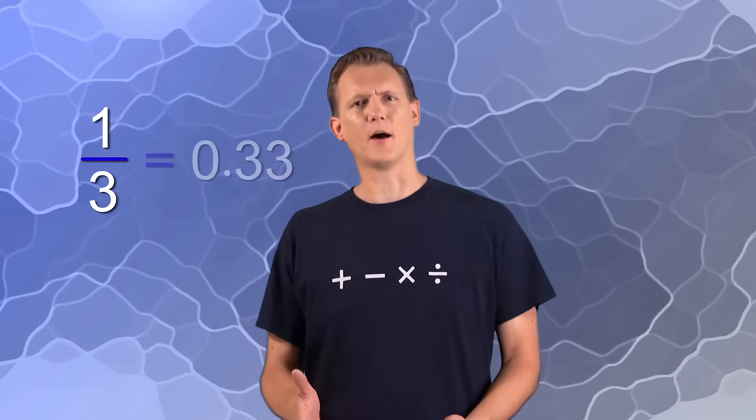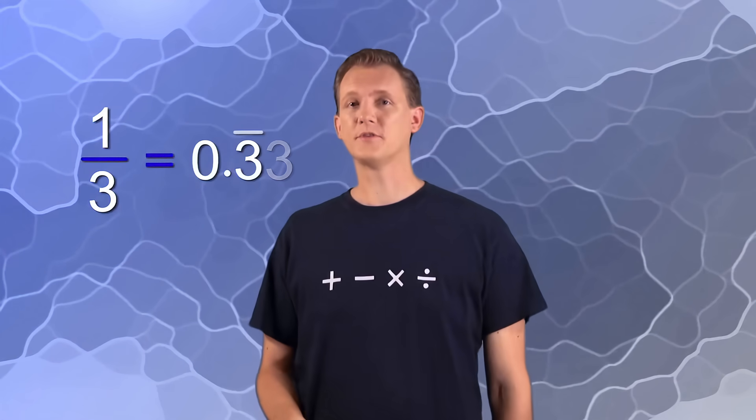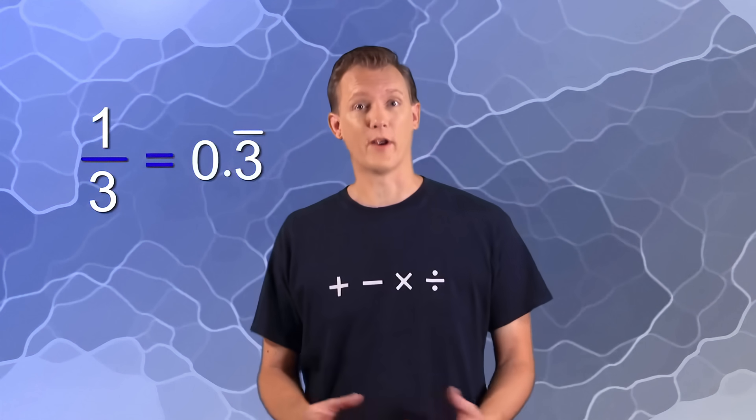So the decimal value of 1 third is 0.333333333 and 3's that keep on going forever. But since we can't keep writing 3's forever, we can just stop and round the number off. Or we can use this special symbol that means this number repeats forever.